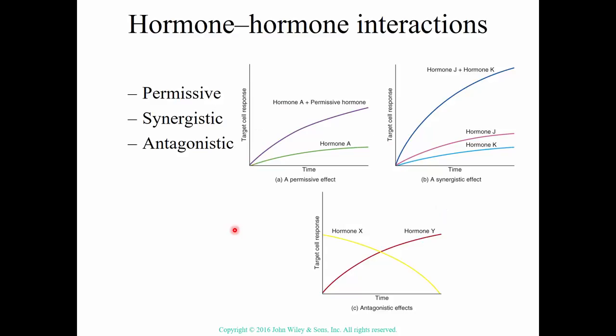Hormones can interact in a number of ways: permissiveness, synergism, and antagonism. We'll concentrate on permissiveness. When a hormone is permissive, hormone A by itself does some job, but in the presence of the permissive hormone, hormone A does a much better job. The permissive hormone isn't doing the job itself, but it has to be present for hormone A to work fully.